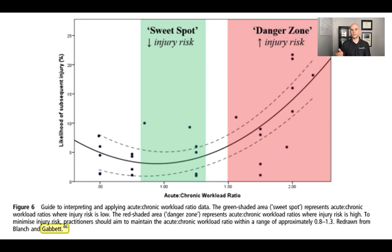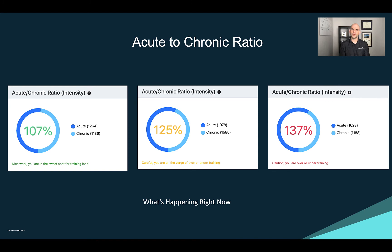Studies have shown there's a sweet spot between 80 and 130 percent of our chronic average compared to what we're doing acutely. Our acute is the previous seven days; our chronic is the average of the preceding four weeks. If your acute is 80 to 130 percent of that average, your risk for injury is reduced. These are color-coordinated: green means you're good, yellow means you're at risk for over- or under-training but not quite there.